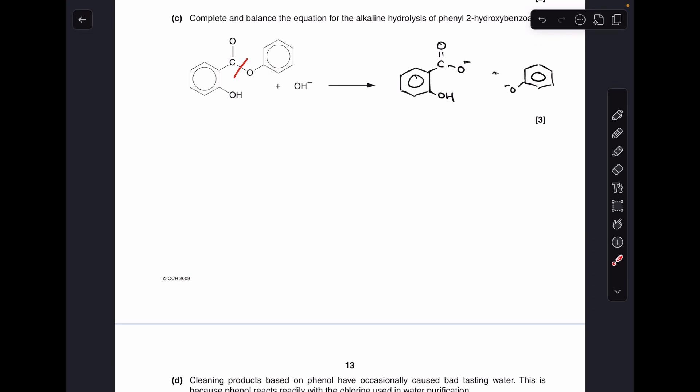And it's going to generate this group here, which is called a phenoxide ion. Now the other thing that's going to happen is the H+ of this phenol group is going to combine with the OH- ion and form a water molecule. So that means that that phenol group there will also become an O- group.